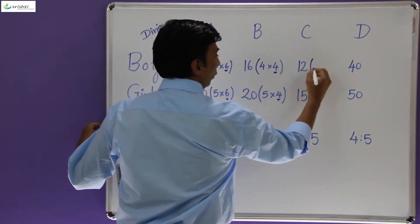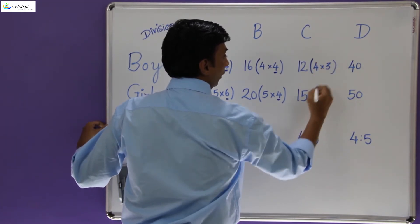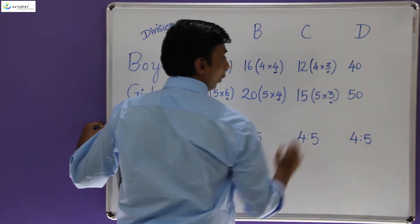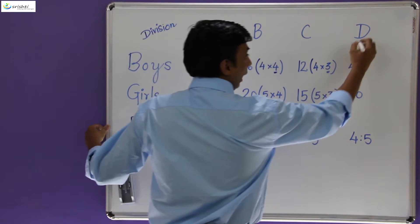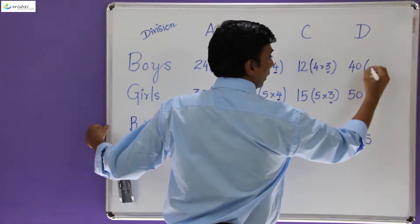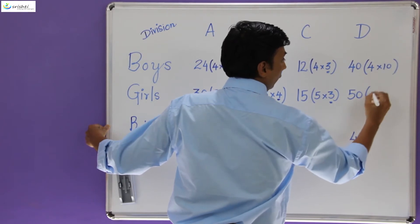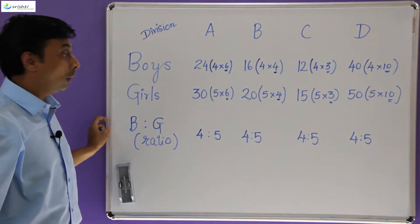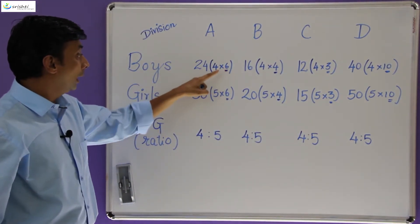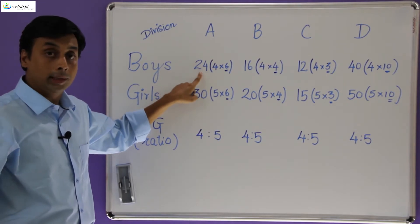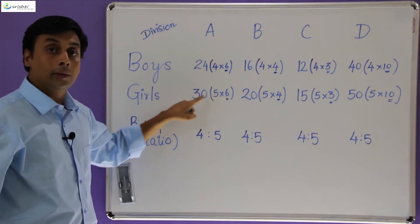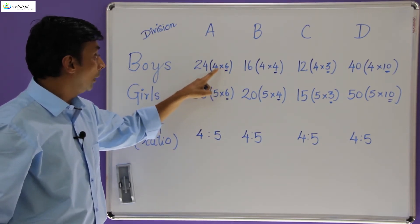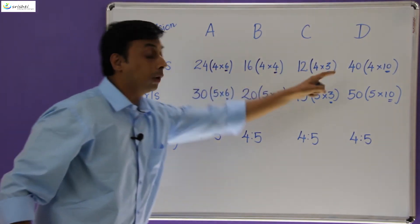That can be done with 12 as well — 12 is 4 × 3 and 15 is 5 × 3. Again the number 3 is common to both. And in division D you have 40, which is 4 × 10, and the number of girls is 50, which is 5 × 10. So in each of these cases you will observe that there is a constant number getting multiplied with 4 to give the number of boys, and multiplying the same number with 5 gives the number of girls.